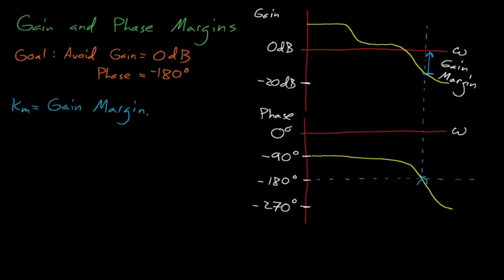The gain margin, k sub m, is equal to the difference between our dreaded unstable gain, which is 0 decibels, and the system's gain at this negative 180 degree frequency.